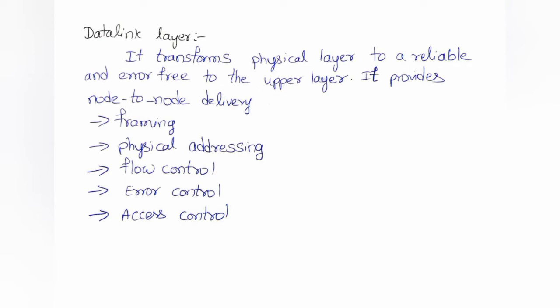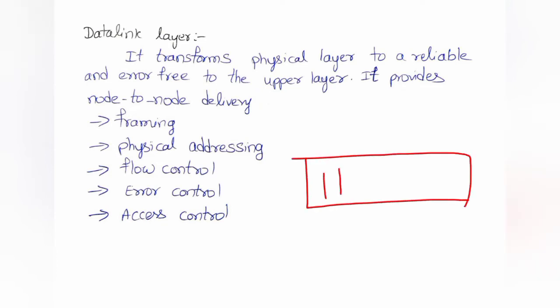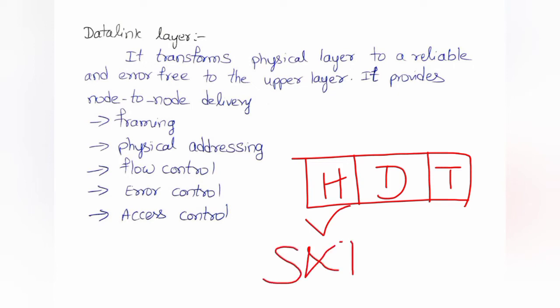In the data link layer, data is formatted as header, data, and trailer. The header field contains the source address and destination address. The data field contains the message to be transmitted, and the trailer contains error control mechanisms — information for error detection and correction. Physical addressing stores the receiver's address in the header, including which network the receiver belongs to, whether the receiver is within the same LAN or outside that network.